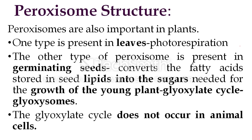Peroxisomes are also important in plants. One type is present in leaves and carries out photorespiration. Photorespiration is essentially the reverse of photosynthesis — in photosynthesis there is fixation of carbon dioxide for sugar synthesis, but in photorespiration, in the presence of sunlight and oxygen, the rubisco enzyme is inhibited and carbon dioxide is released instead of being fixed.